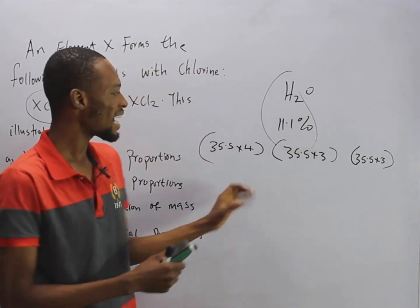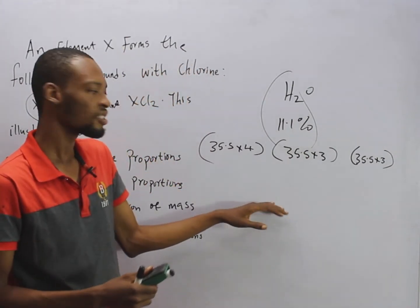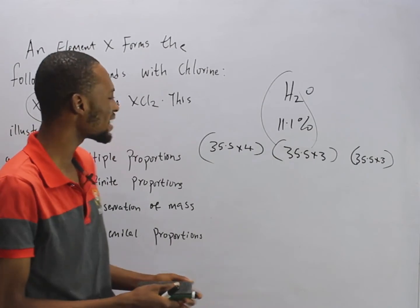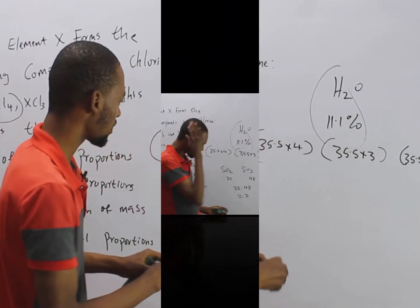So now, multiplying this and dividing to break down to get the simple ratio, you'll discover that they are in simple multiple proportions. Look at this.